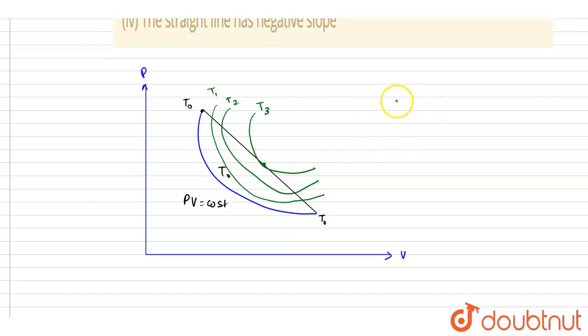This line is tangent to T3 isotherm. So if you see here, if it is tangent to T3 isotherm, here the temperature will be maximum. This will be the maximum temperature; temperature can't be more than this.